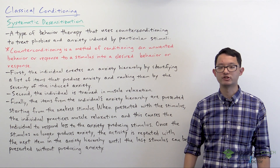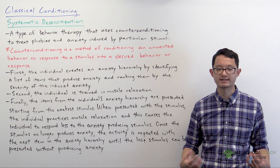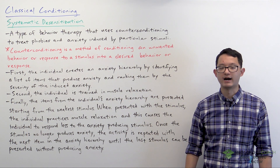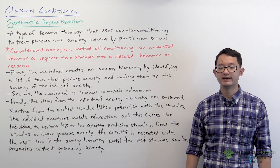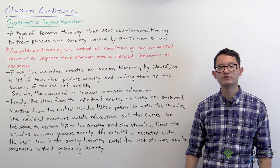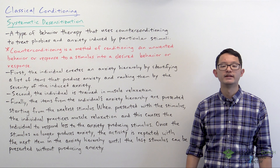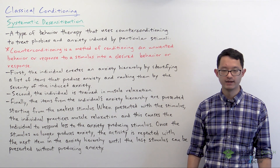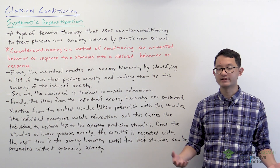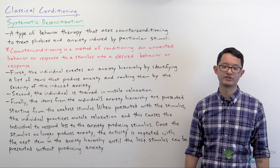Second, the individual is trained in muscle relaxation — they're taught how to relax their muscles. Finally, the individual is presented with the items in the anxiety hierarchy starting with the weakest stimulus. When presented with each item they practice muscle relaxation, because when your muscles are relaxed you can't at the same time experience anxiety — the two are opposites to each other.